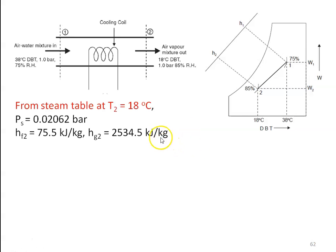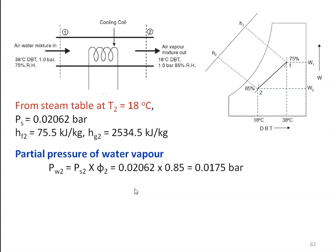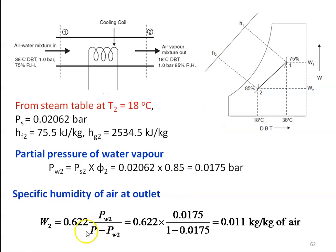Again from the steam table at T2 equal to 18 degree Celsius, the saturation pressure PS2 equal to 0.02062 bar, enthalpy of water HF2 equal to 75.5 kilojoules per kilogram, and enthalpy of vapor HG2 equal to 2534.5 kilojoules per kilogram. The partial pressure of water vapor PW2 equal to PS2 into φ2, which is 0.02062 into 0.85 equal to 0.0175 bar. The specific humidity at the outlet: W2 equal to 0.622 × 0.0175 divided by (1 minus 0.0175) equal to 0.011 kg per kg of air.